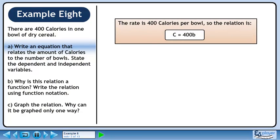The rate is 400 calories per bowl, so the relation is C equals 400B, where C is the amount of calories and B is the number of bowls.